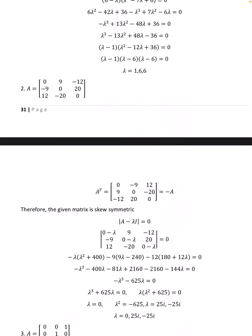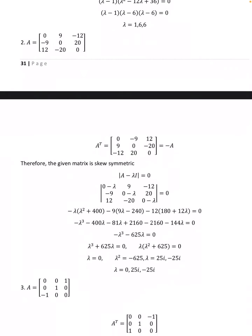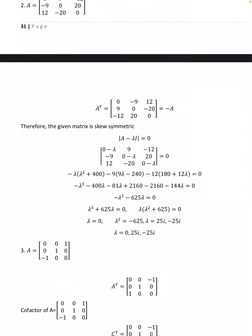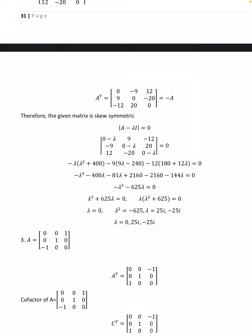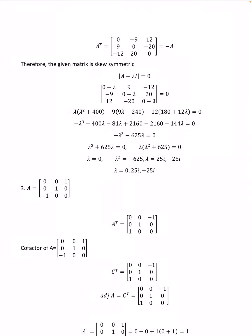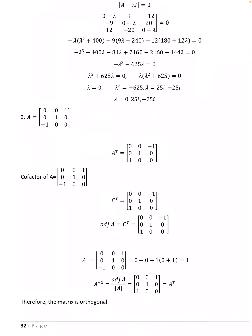Second, A = [[0, 9, −12], [−9, 0, 20], [12, −20, 0]]. A transpose = −A. Therefore the matrix is skew-symmetric. Setting det(A − λI) = 0 and opening the brackets gives −λ³ − 625λ = 0, so λ = 0, 25i, −25i.